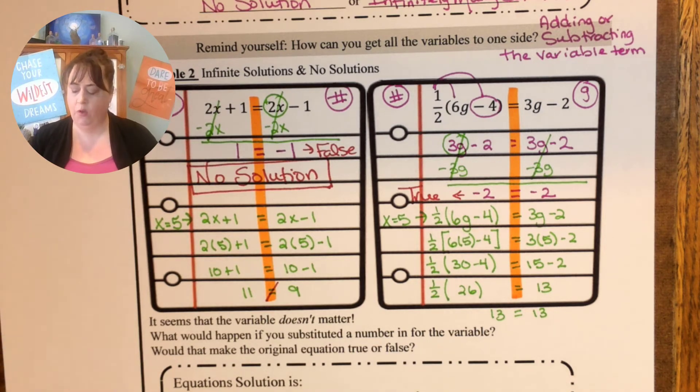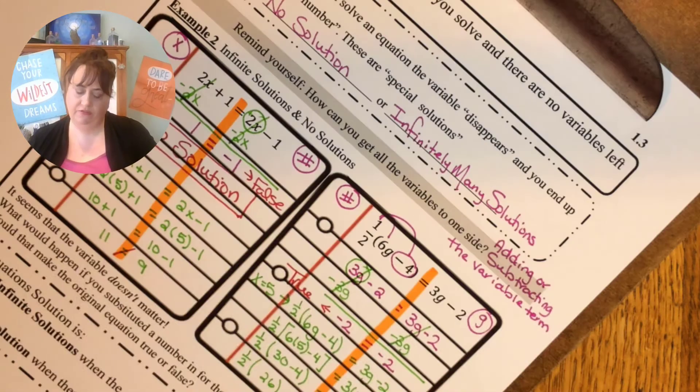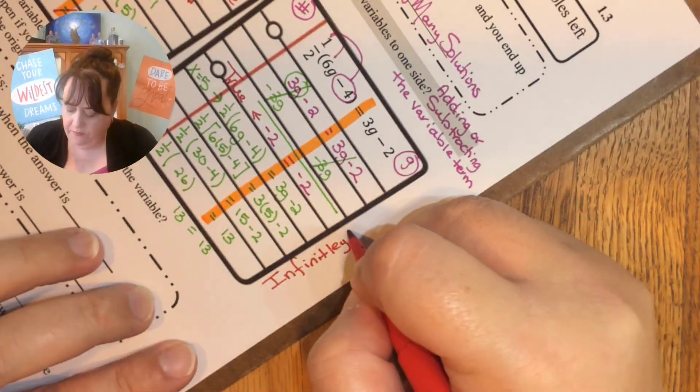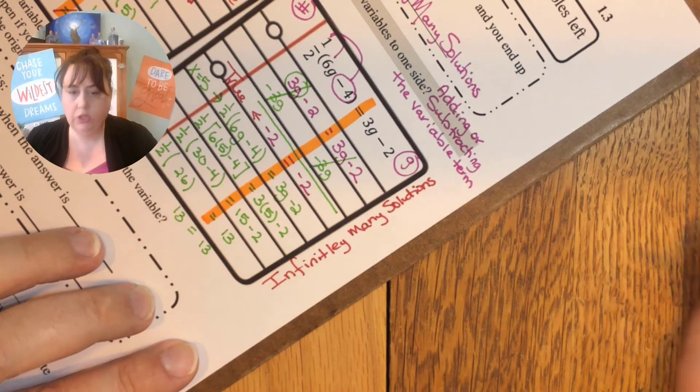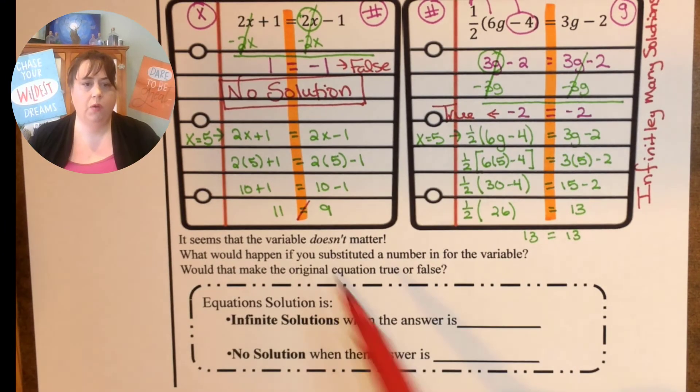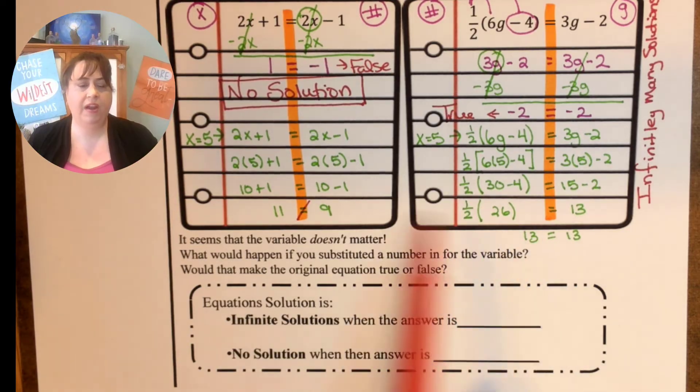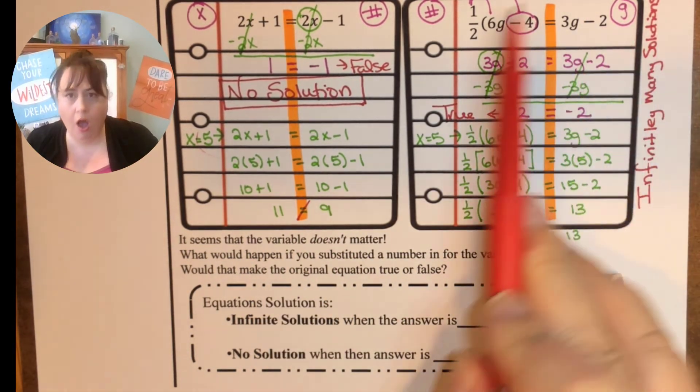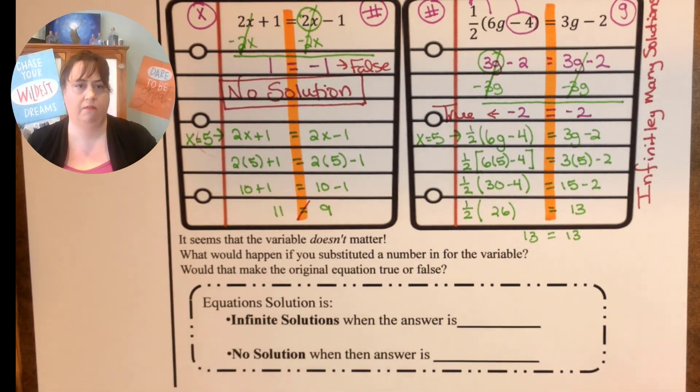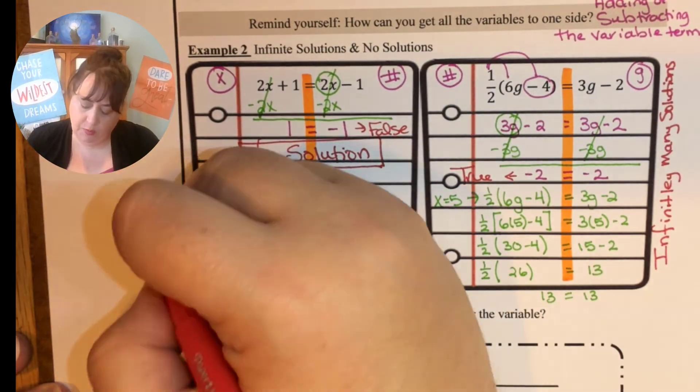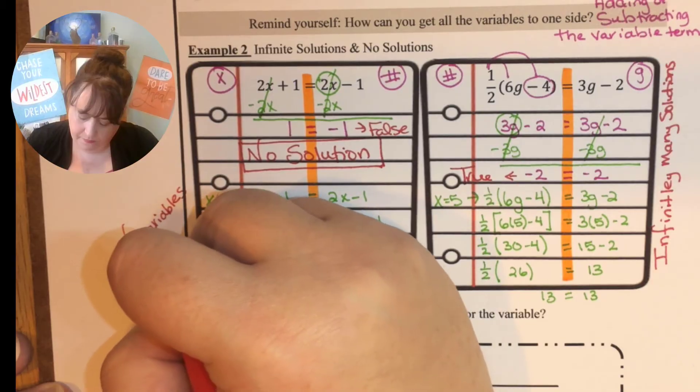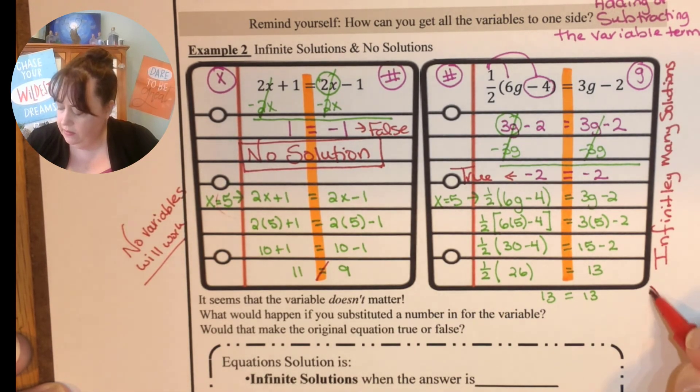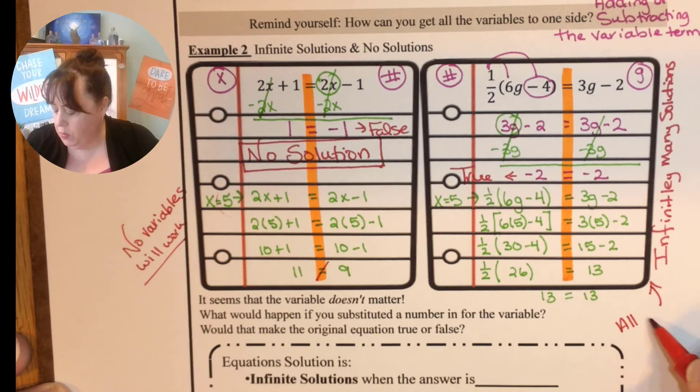And so since it always works, the answer to this is infinitely many solutions. So if I substituted a number in for the variable on this one, no variables are going to work. On this one, all variables are going to work. No variables will work here. On this one, all variables will work.